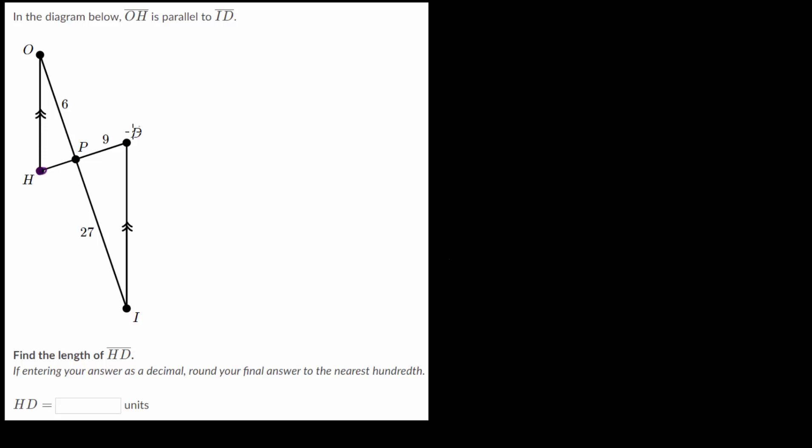Which is this line right here from H to D. And we know part of it. We know PD is equal to 9, which means that we just need to find the length of HP here.